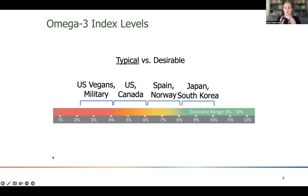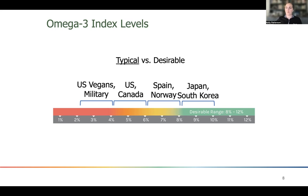Looking at different countries, we see lifestyle differences come to the surface. On the low end, US vegans and military tend to have the lowest average omega-3 index levels. Vegans aren't getting any marine sources of omega-3s, and for military there are multifactorial reasons — increased oxidative stress from training and poor diet quality.